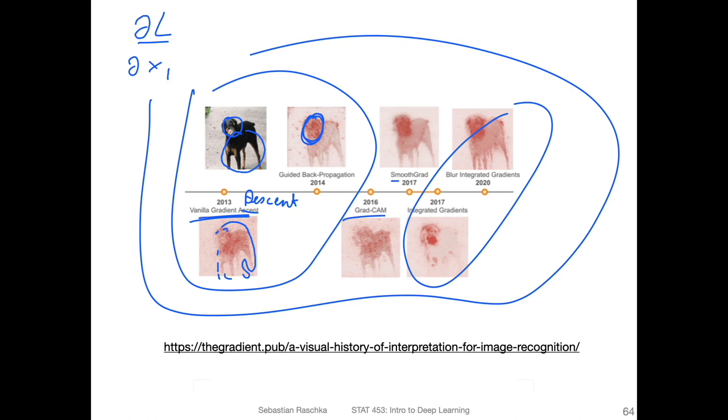There are other methods, for instance, a smooth grad method and blur integrated gradients. You can see they are all somewhat similar, but they're all good methods for looking at what parts of the image the network pays attention to. I would recommend in practice, if you work on a bigger project and your project is on classification, it might be a good idea to utilize one of these methods to really look at what your network pays most attention to, at least for a handful of images. It can help sometimes to make sure the network does something that is actually sensible.